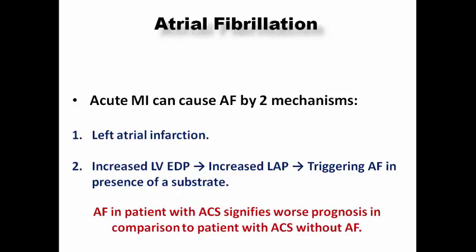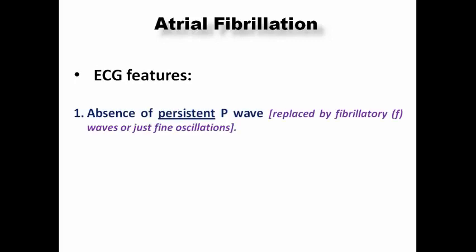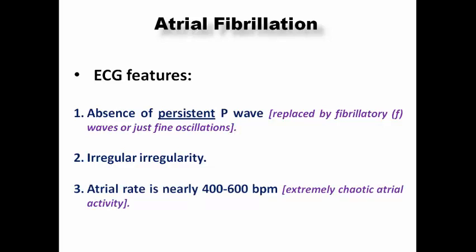AF in the context of MI affects risk stratification and antithrombotic management per guidelines. This patient's CHA₂DS₂-VASc score would be at least 1 as an ischemic patient, requiring long-term oral anticoagulation. ECG features of AF: absence of persistent P waves replaced by fibrillatory waves, irregular irregularity due to chaotic atrial activity, and atrial rate of approximately 400–600 bpm.